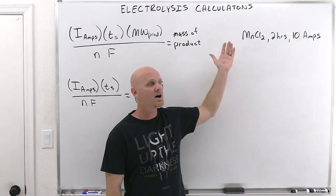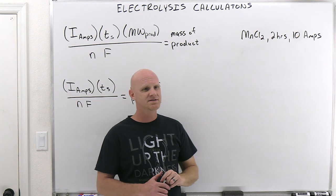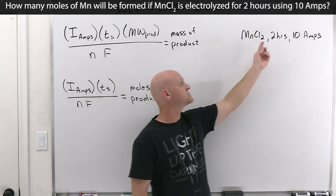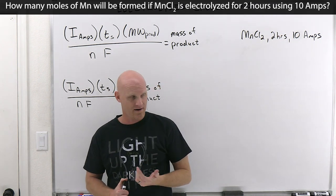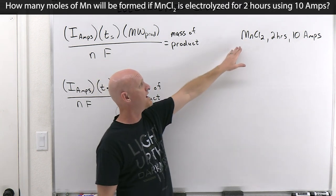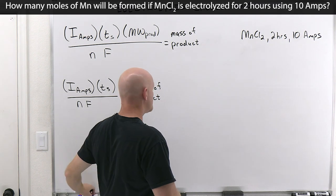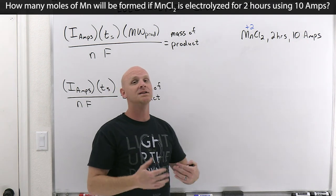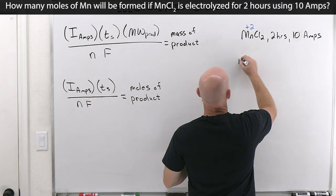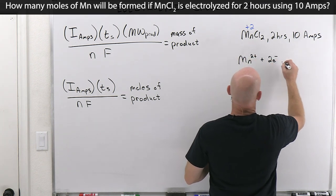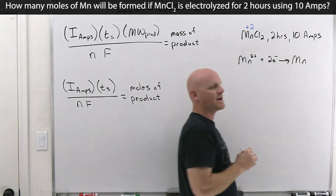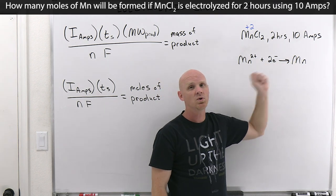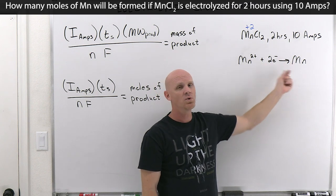We're going to learn this in the context of a problem: the electrolysis of manganese(II) chloride. The question asks how many moles of manganese will be formed if MnCl₂ is electrolyzed for two hours using 10 amps. Manganese here is in the +2 oxidation state, and we're making elemental manganese. The half reaction is: Mn²⁺ + 2e⁻ → Mn. So for every two moles of electrons transferred, we gain one mole of manganese — a two-to-one ratio.